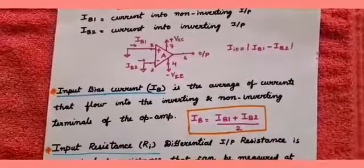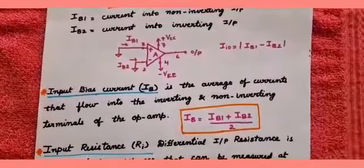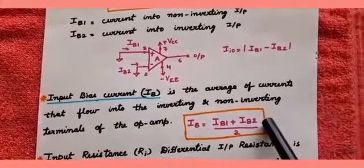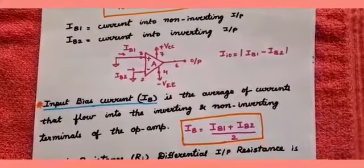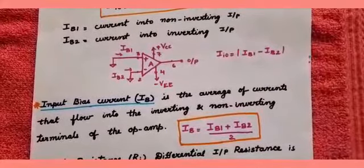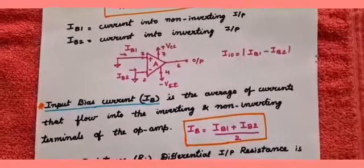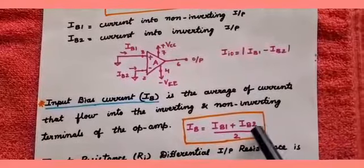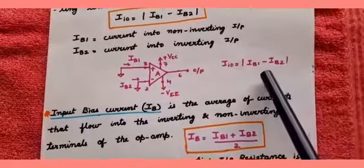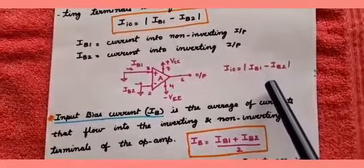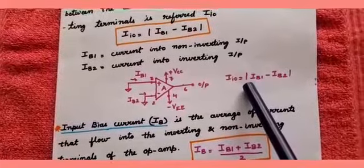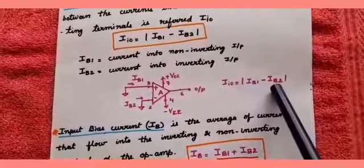The next characteristic is input bias current. Input bias current, symbolically written as IB, is the average of the currents that flow into the inverting and non-inverting terminals of the op-amp. IB is equal to (IB1 plus IB2) divided by 2.